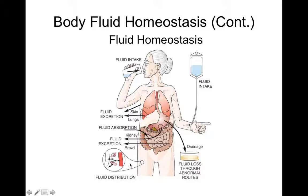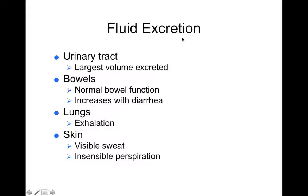Fluid distribution can also be altered. Water inside your bloodstream might end up being absorbed by your body's tissues and vice versa. Fluids excreted through the urinary tract produce the largest volume of fluid excreted. In the bowels, you lose some fluid in normal bowel function, but a lot more with diarrhea. With lungs, fluid loss occurs with exhalation. In skin, you can lose it through visible sweat and insensible perspiration — basal sweat — which is always occurring.